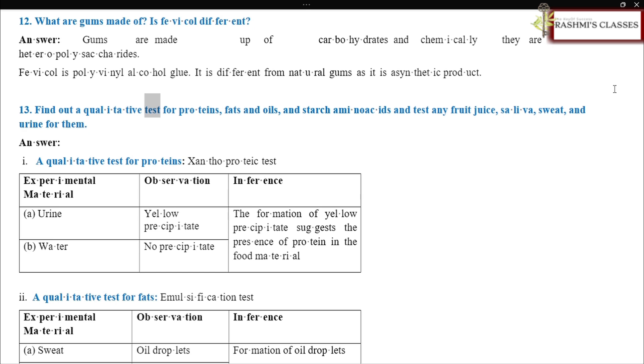Find out a qualitative test for proteins, fats, and oils, and starch amino acids and test any fruit juice, saliva, sweat, and urine for them. Answer. A qualitative test for proteins, xanthoproteic test. Experimental material, observation, inference. Urine, yellow precipitate. The formation of yellow precipitate suggests the presence of protein in the food material. Water, no precipitate.